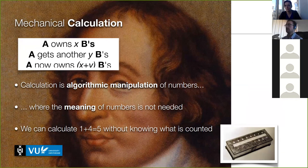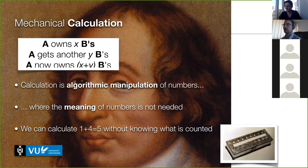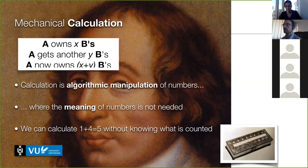This led to mechanical calculation — the invention of modern mathematics in the sense that you could think of algorithmic manipulation of numbers where the meaning of those numbers is not important. What's important is the symbols and the operators. This is also very important for knowledge representation, because it operates on the same basis: symbols and operations between symbols.